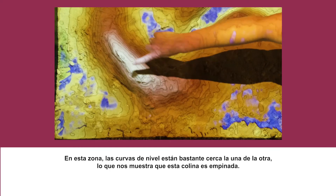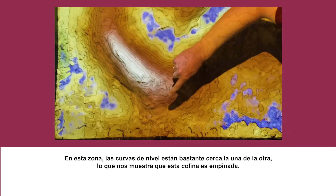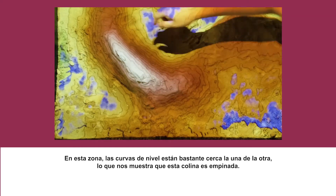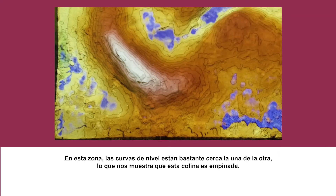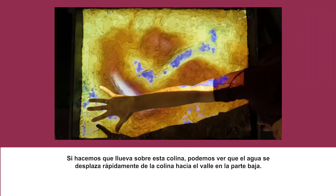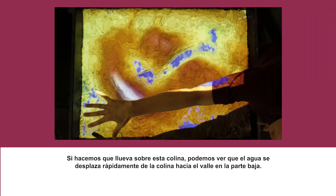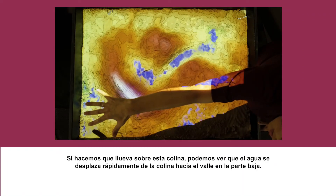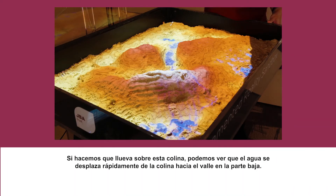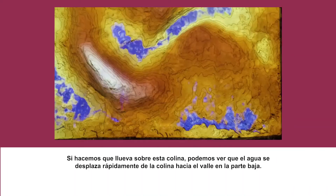In this area here, the contour lines are spaced very closely together and that shows that the hill is steep. If we rain on that hill, you can see that the water moves very quickly off that hill and into the valley below.